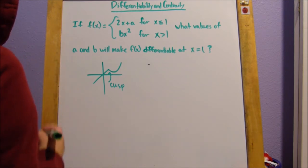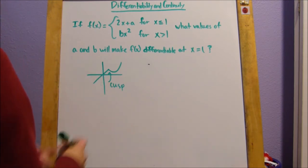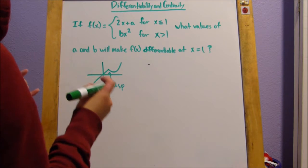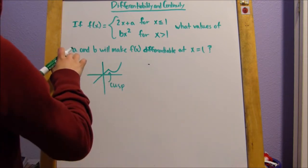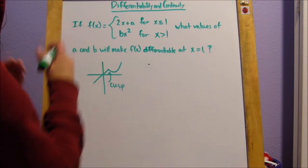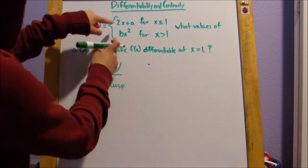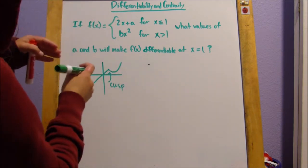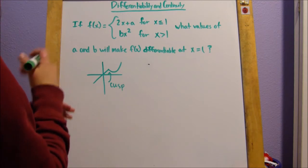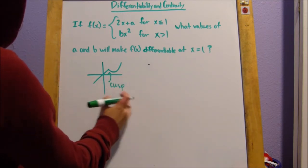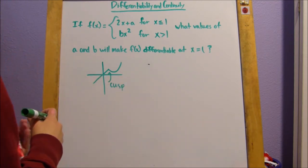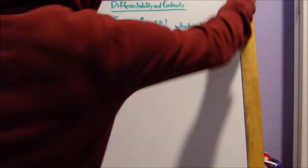And we can't have a cusp because, as you know, you can't take the derivative of a cusp. So, we have to find some a and b in which these two slopes will be the same. The slopes, the derivatives, that's the same thing, in which the derivative will be the same. So, we don't end up with this cusp. So, we can take the derivative of f of 1.